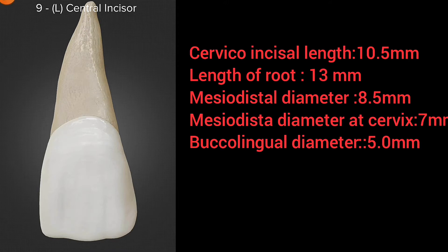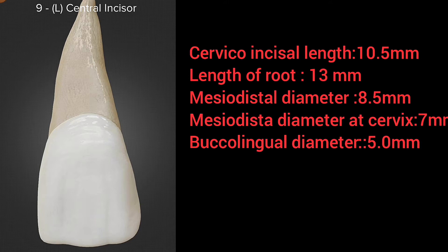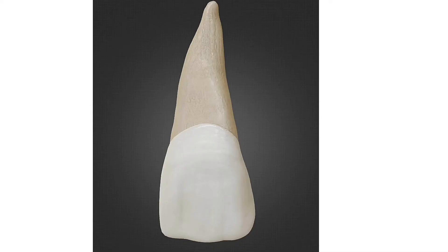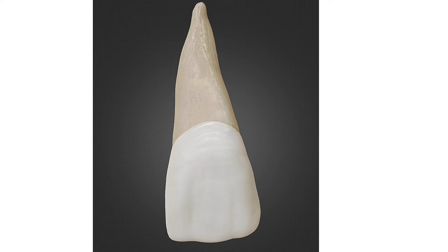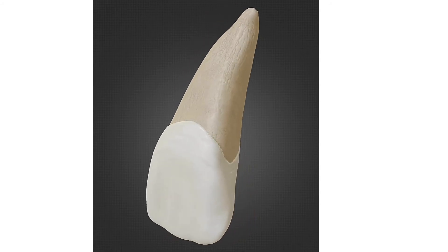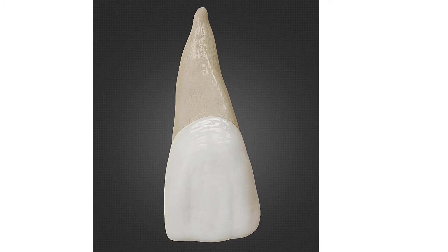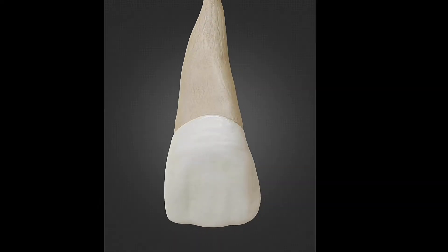The function of this tooth is to help in cutting food and in speech. It is the main tooth that helps with aesthetics — without it, people would look unusual — and it also helps to close the oral cavity. Studying morphology is important for developing prostheses or restorations, and during extraction, knowing the morphology helps because the central incisor can rotate easily within the alveolar bone without fracturing, as it has only a single root.